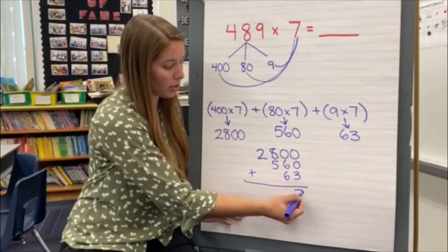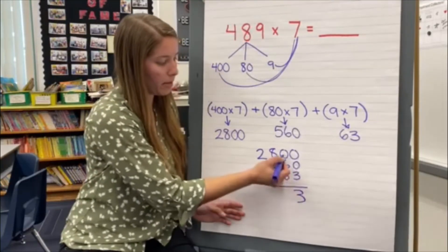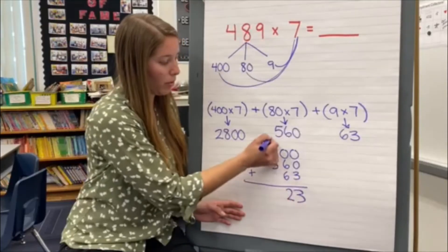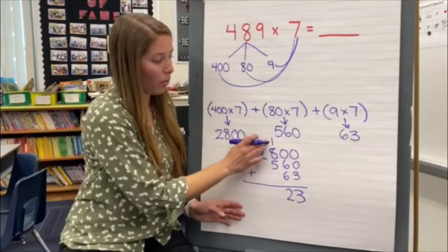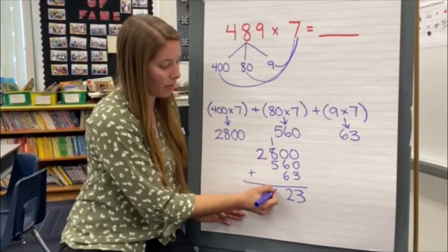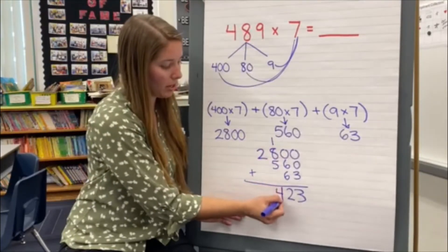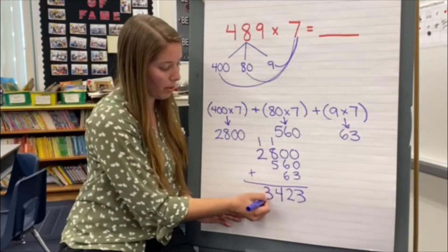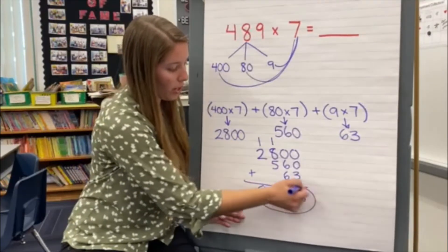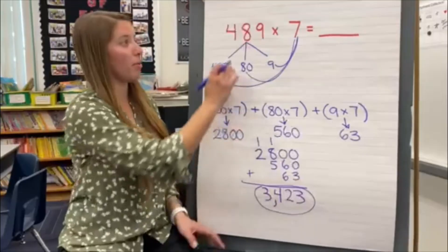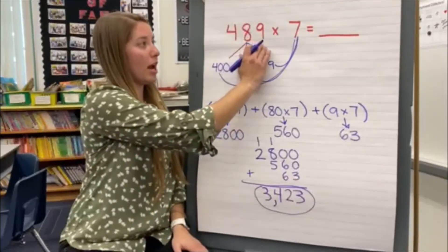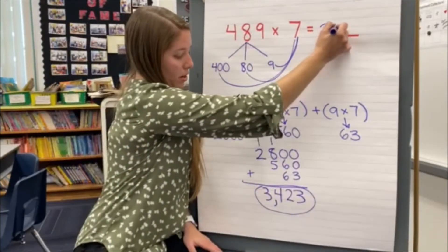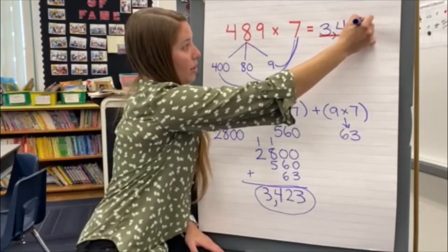0 plus 0 plus 3 is 3. 0 plus 6 plus 6 is 12, so we regroup. 1 plus 8 plus 5 is 14 — again we regroup. And 1 plus 2 is 3. So here is our answer: 489 times 7 equals 3,423.